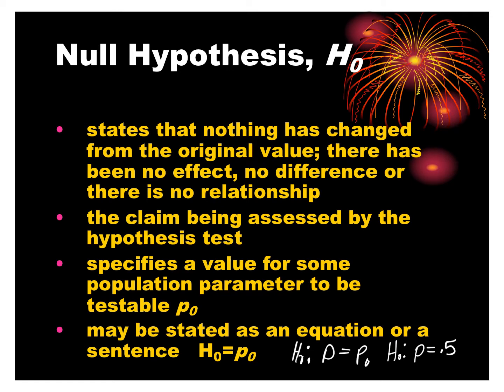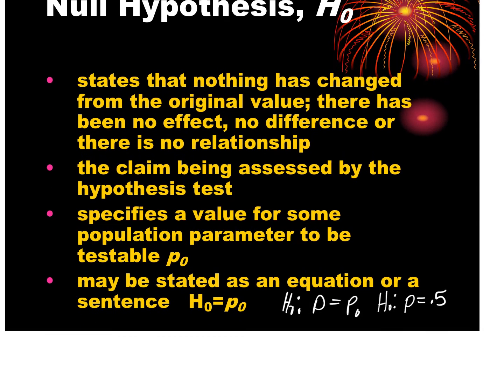Our hypothesized value — what we believed was true about a deck of cards — is that half of the cards are black. And that was our null hypothesis, written as p = 0.5.